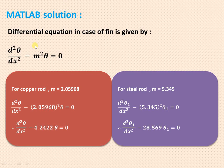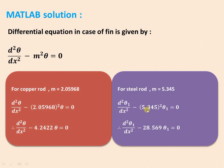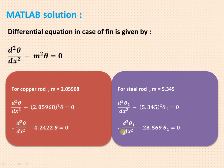The differential equation for the fin is d²θ/dx² − M²θ = 0, a second-order differential equation. For the copper rod, M = 2.05968, so M² = 4.2422, giving d²θ/dx² − 4.2422θ = 0. For the steel rod, similarly, d²θ₁/dx² − M²θ₁ = 0, where M² = 28.569, giving d²θ₁/dx² − 28.569θ₁ = 0. Using MATLAB, we solve these two differential equations and plot the temperature variation.